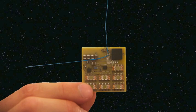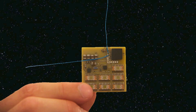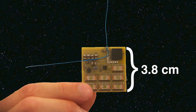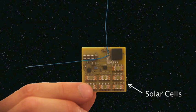Sprite is made of totally off-the-shelf electronic components that anyone can buy. It's built on a square printed circuit board 3.8 centimeters on a side. It has solar cells for harvesting energy, which is then stored in a bank of capacitors.